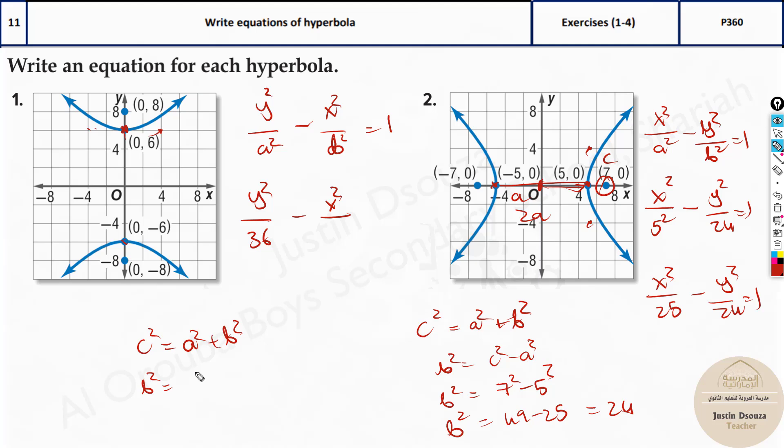So b squared value will be c squared, that is 64. c value is 8. 64 minus 36. And the answer over here is 28. So you can directly write it as 28 equals 1. So these are the equations of these hyperbolas. So the first one is y squared by 36 minus x squared by 28 equals 1.